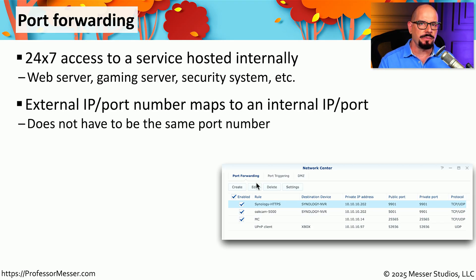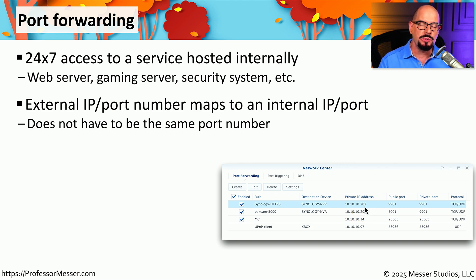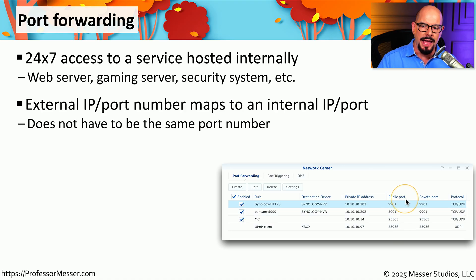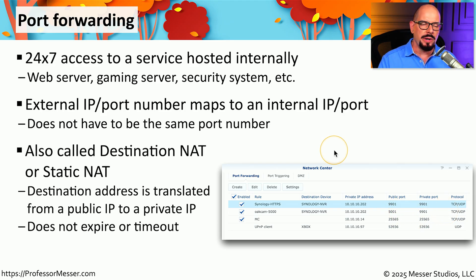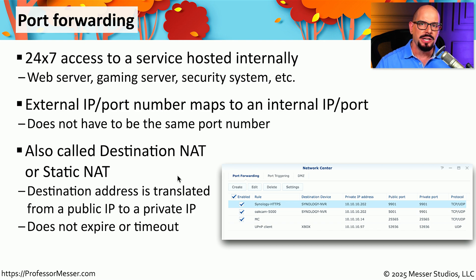There are usually three or four pieces of information required to create a port forward: a private IP address (in our example, the IP address used internally for the web server), a port number accessed publicly on the outside of the firewall, and a port number used to communicate internally to that web server. Sometimes these are the same port number, but they can also be different. On larger enterprise devices, this is referred to as a destination NAT or static NAT — translating a public IP address to a private IP address on the inside of your network.